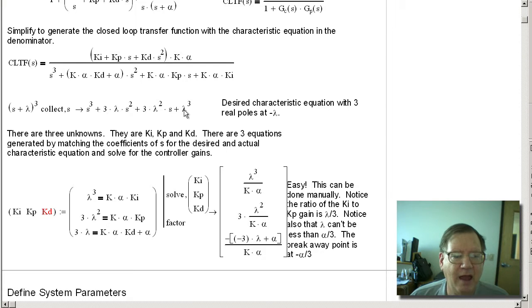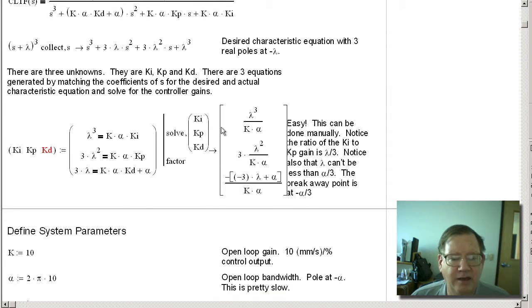So here I have lambda cubed, and that's going to be equal to k times alpha times ki. That's the zero power of s. The first power of s, three times lambda squared, that's going to be k times alpha times kp, which is what you see down here. And then finally we have the second power of s. So we have three times lambda is going to be equal to k times alpha times kd plus alpha. And we solve and we get three symbolic formulas for ki, kp, and kd.